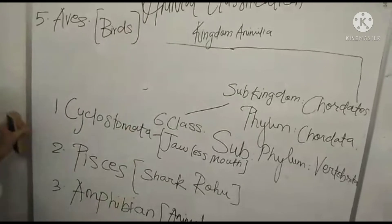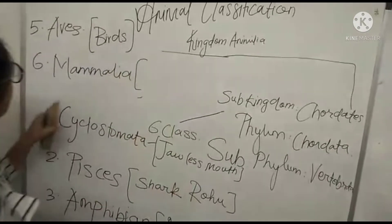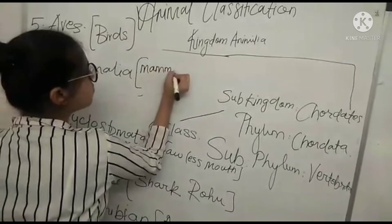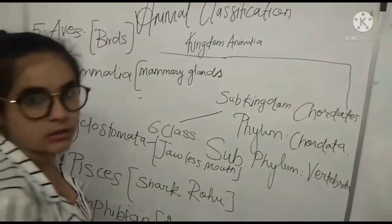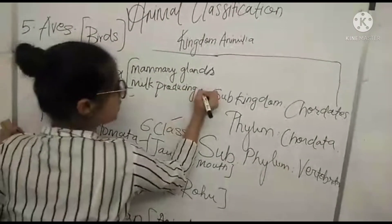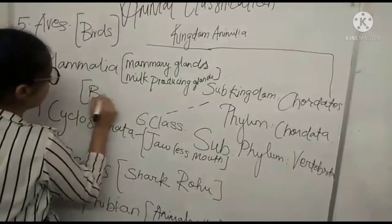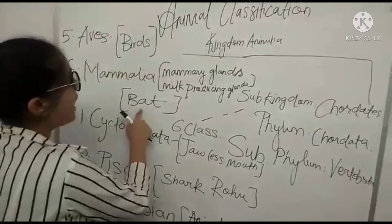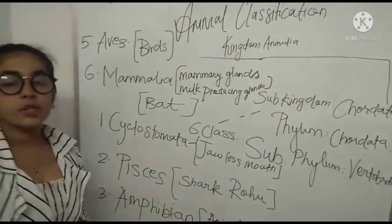And our last one is Mammalia. Mammalia are the animals which have mammary glands and which produce milk. Here the example is bat. Now a question will arise in your mind — how come bat? Because bat is also a bird, but bat has mammary glands and hence it is considered Mammalia.